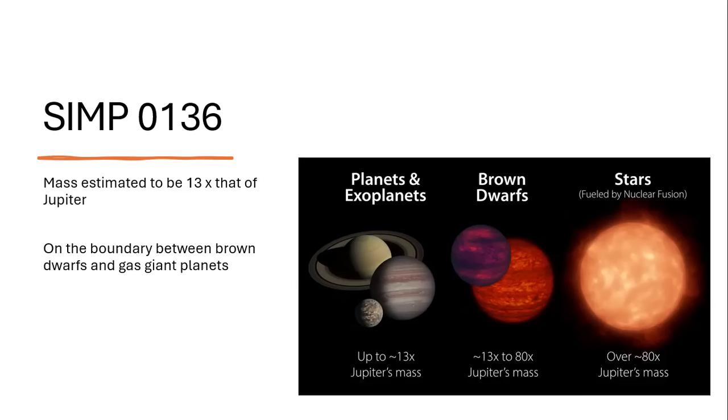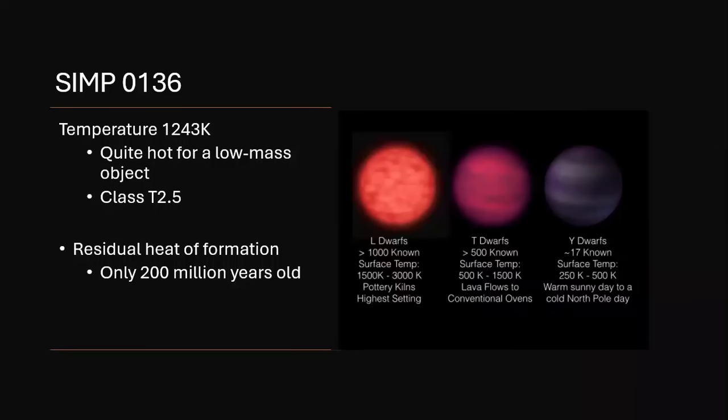So what is it? A gas giant or a brown dwarf? Well, the temperature of 1243 Kelvin is too high for a gas giant. It tells us that really we're dealing with a brown dwarf here. And it puts it in that T category, the middle ranking temperature range for brown dwarfs.